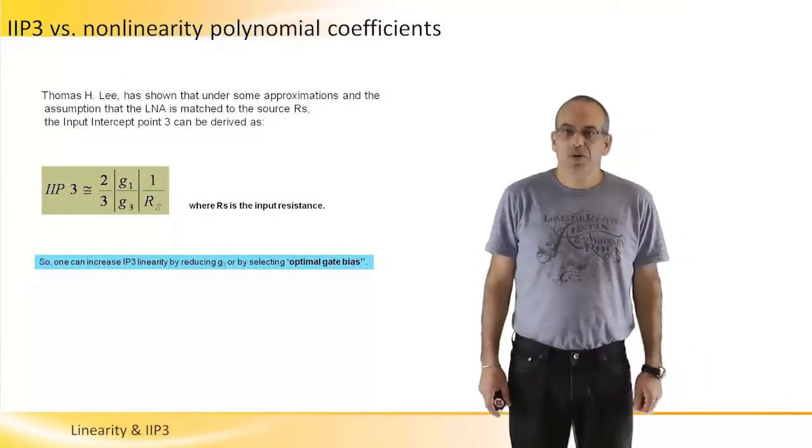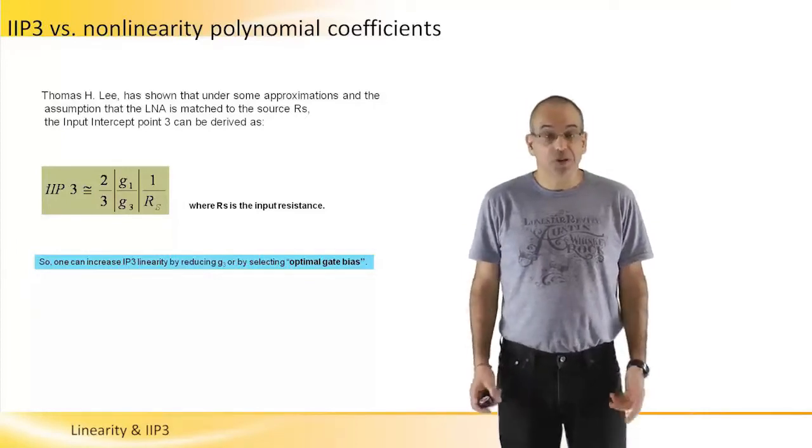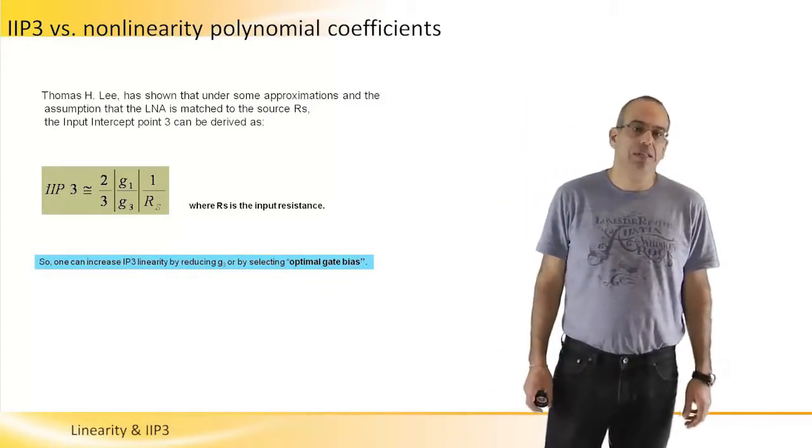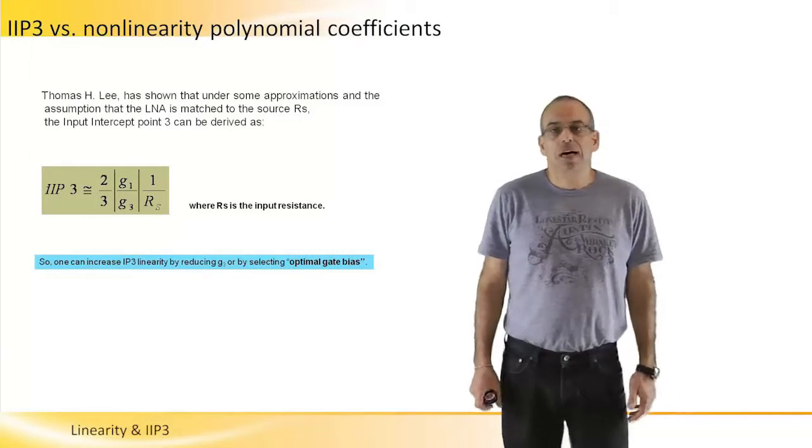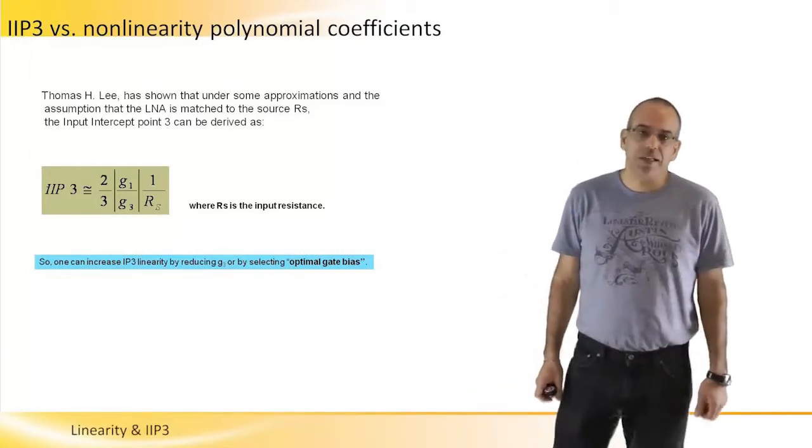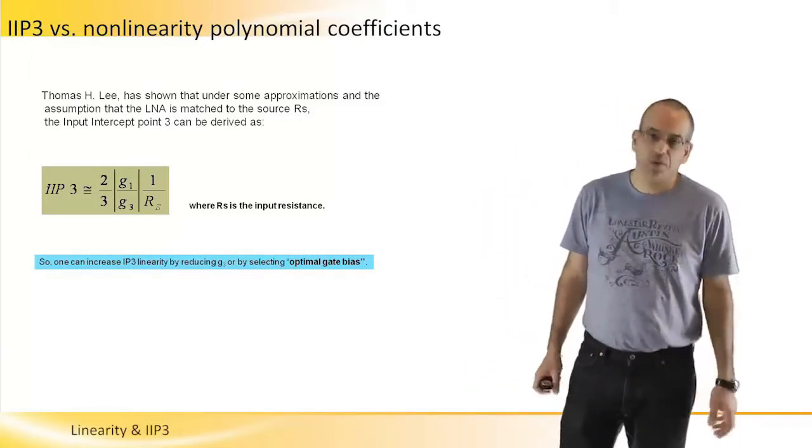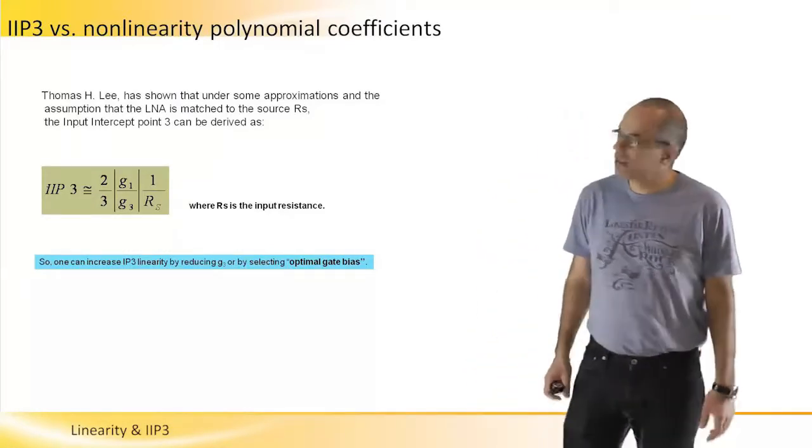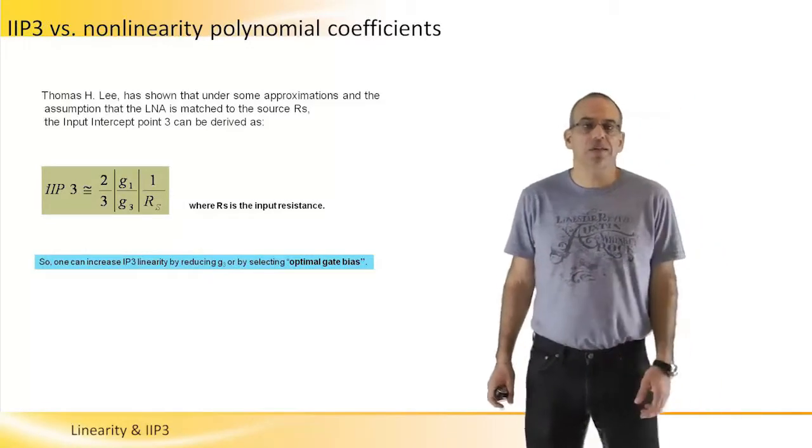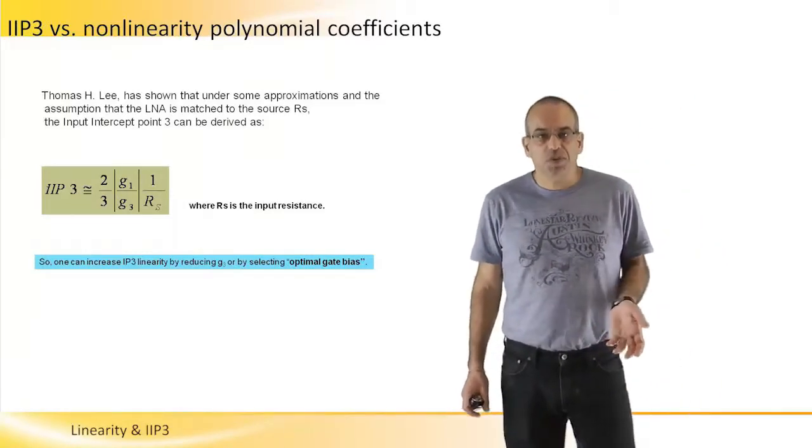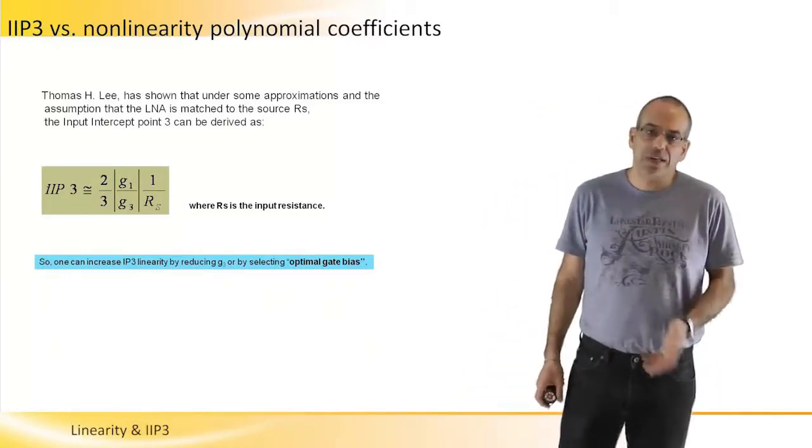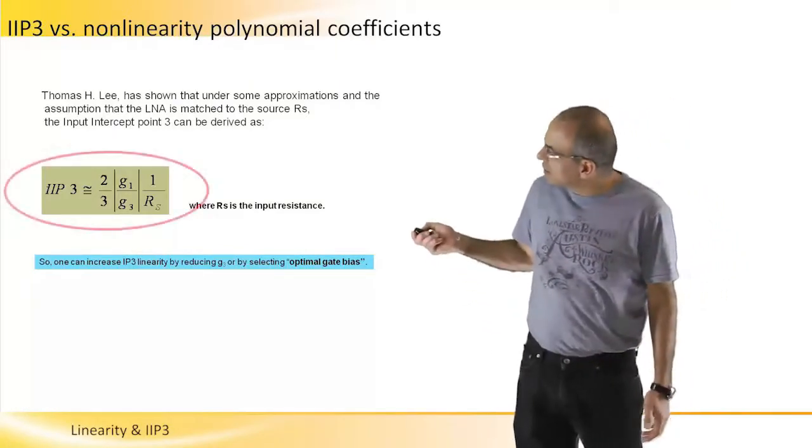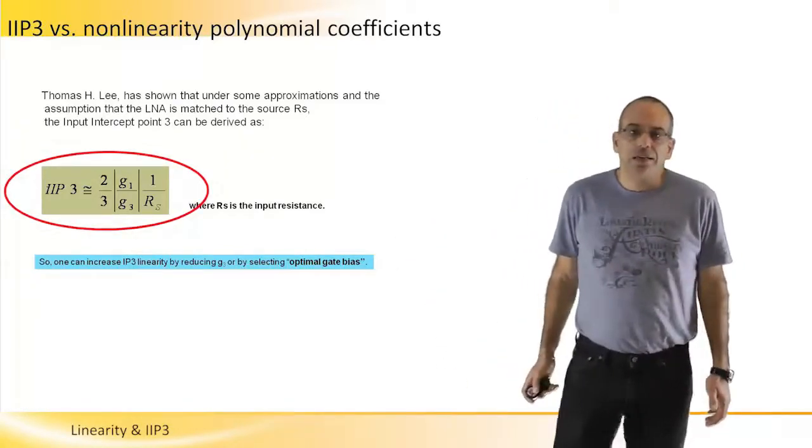Non-linearity polynomial coefficients can be useful in describing input IP3. Professor Thomas H. Lee has shown that under some approximations and the assumption that the LNA is matched at the source to resistance RS, the input intercept point 3 can be derived as can be seen in this formula.